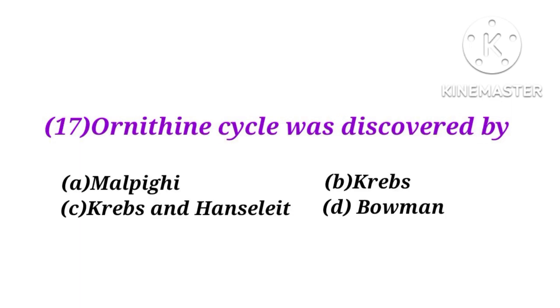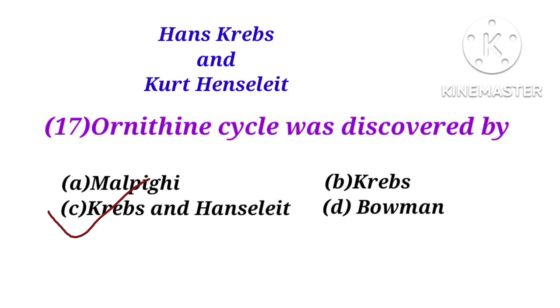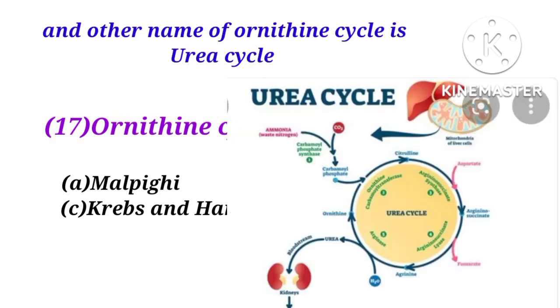Number 17. The ornithine cycle was discovered by Malpighi, Krebs, Krebs and Hanseleit, or Bowman? The answer is C. The ornithine cycle was discovered by Hans Krebs and Kurt Henseleit in 1932. Another name for the ornithine cycle is the urea cycle.